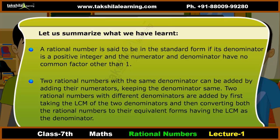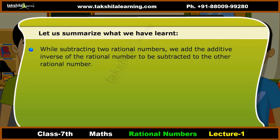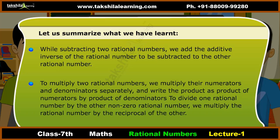Two rational numbers with different denominators are added by taking the LCM of the denominators and converting both to equivalent forms with the LCM as the denominator. For subtraction, we add the additive inverse of the rational number to be subtracted. To multiply two rational numbers, we multiply their numerators and denominators separately and write the product as the product of numerators over the product of denominators. To divide one rational number by another non-zero rational number, we multiply it by the reciprocal of the other.